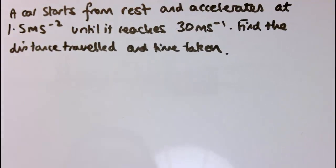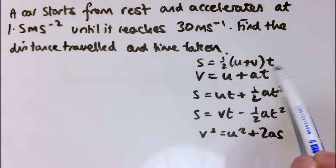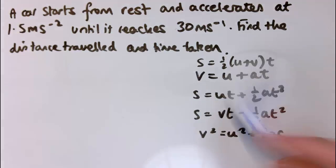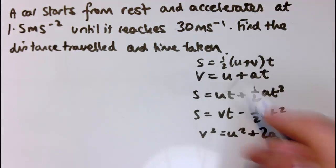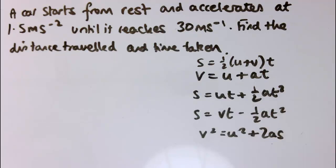In this video I'm going to look at a few problems using the SUVAT formulae that I've described in a previous video. Just as a reminder, here they are: s equals half (u plus v)t, v equals u plus at — I think of those two as the main ones, and you can derive the other three from those. s equals ut plus half at squared, s equals vt minus half at squared, and v squared equals u squared plus 2as. See my video on deriving them if you want to understand where they all come from.